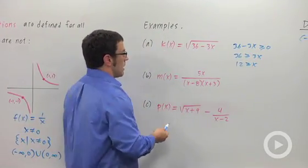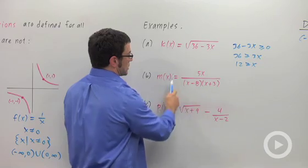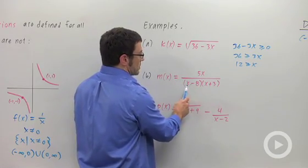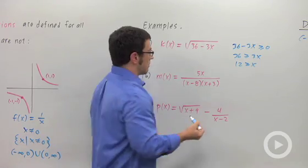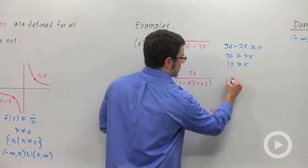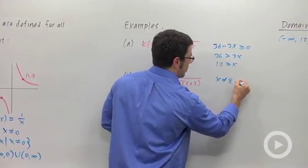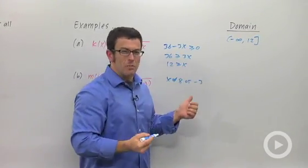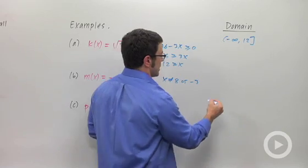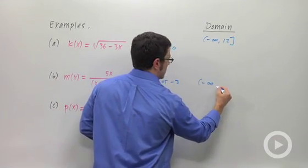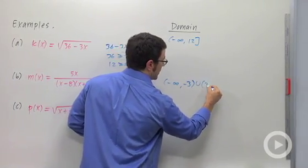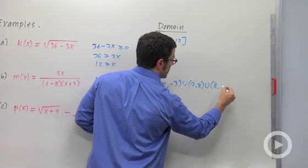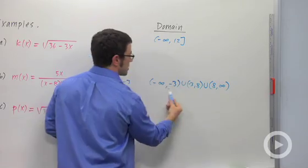Now, this function is a rational function, which we'll study later. It's only going to be defined for real numbers other than 8 and negative 3, because the denominator will be 0 there. So x doesn't equal 8 or negative 3. This is a little cumbersome in interval notation, but you'd say from negative infinity to negative 3, negative 3 to 8, and 8 to infinity. So these three intervals.